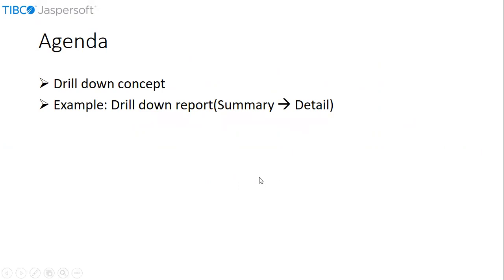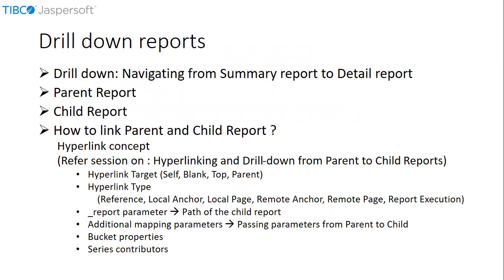Let's get started. What is drill down? Drill down is a mechanism to navigate from a summary report to a detail report. We call the summary report the parent report and the detailed report the child report. We can achieve this drill down concept from parent report to child report using a hyperlinking mechanism. Hyperlinking mechanism includes several properties: hyperlink target, hyperlink type, underscore report parameter, and additional parameters that we can pass from the parent report to the child report.